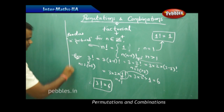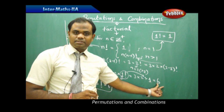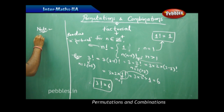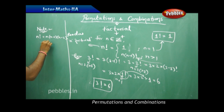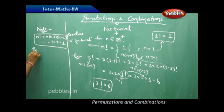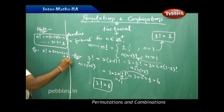An important observation is that every time we compute a factorial, the numbers consecutively decrease by 1 unit until they reach 1. Therefore n factorial is defined as n times (n minus 1) times (n minus 2) times (n minus 3) and so on down to 3, 2, and finally 1.